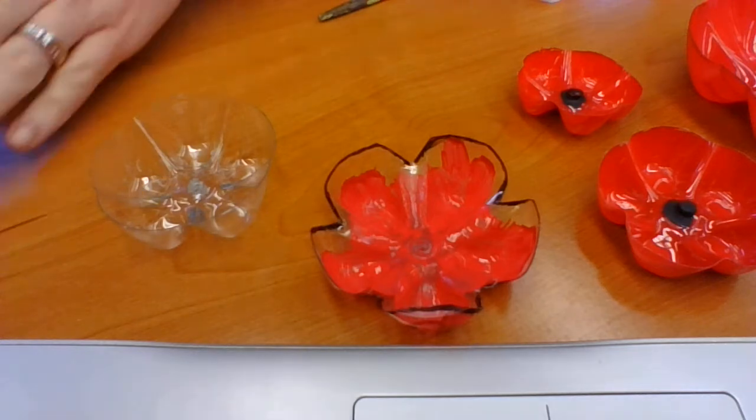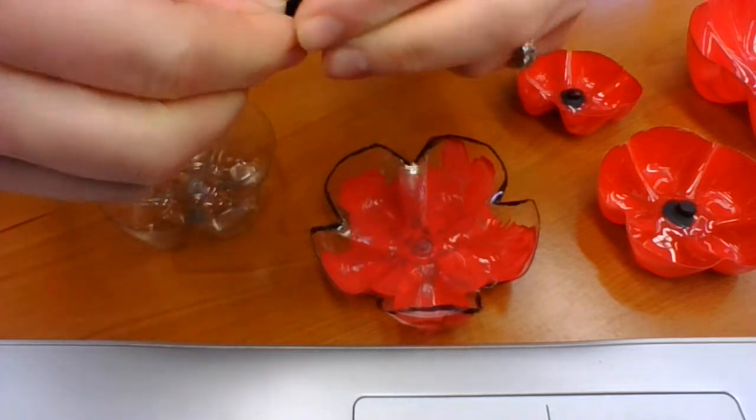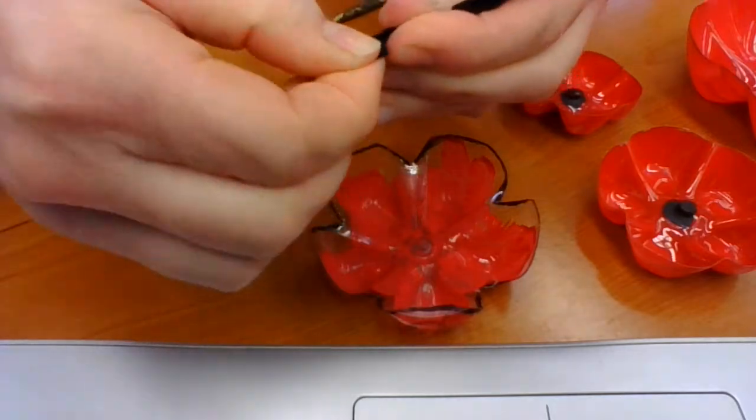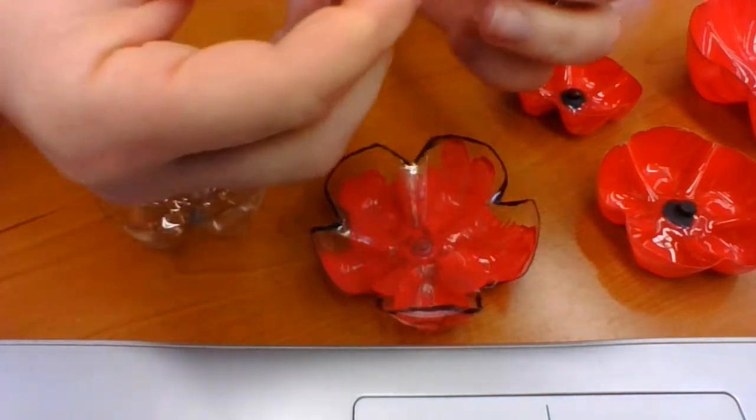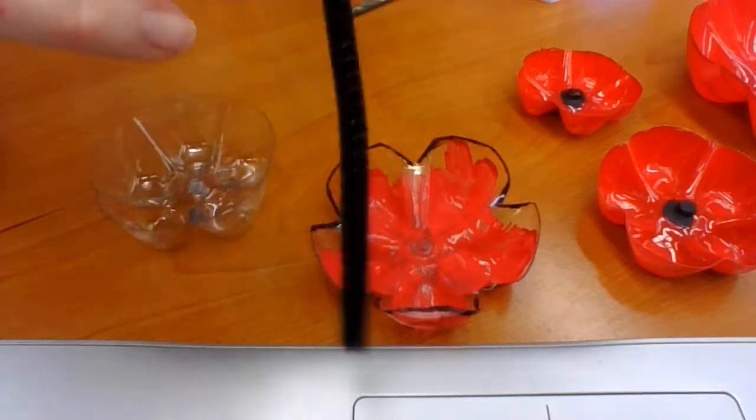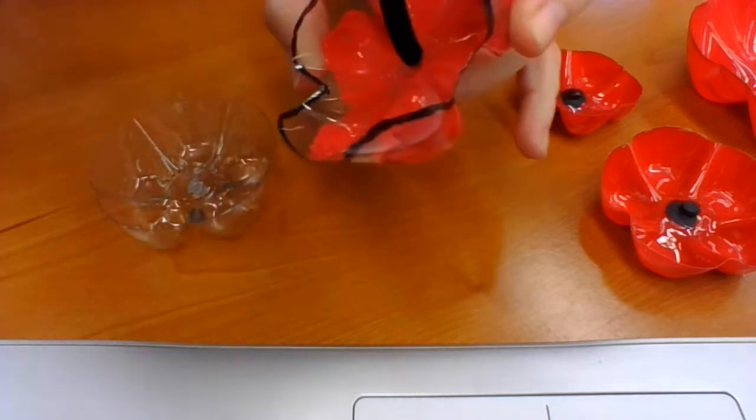And then I am using a pipe cleaner here to do the stem. So I'm just going to make a little center here on the one end and wrap it and curl it in on itself. And then I've got a hole in the center here that I'm going to stick the pipe cleaner through.